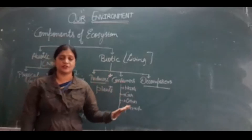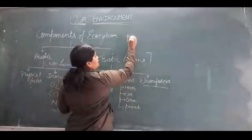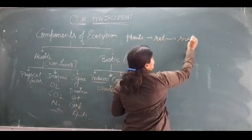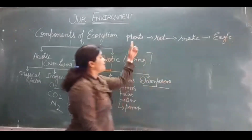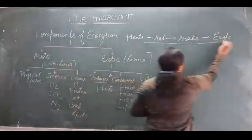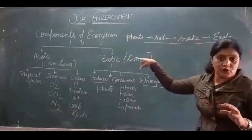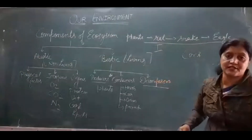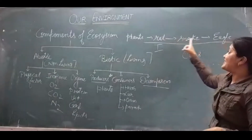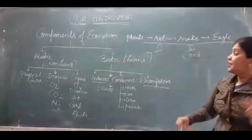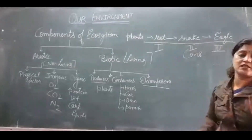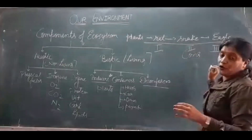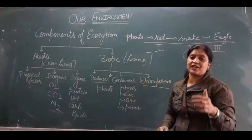Consumers are also categorized as primary, secondary, tertiary, and quaternary consumers. For example: a plant is a producer; a rat eats the plant, so the rat is herbivorous and is the primary consumer; the snake eats the rat, so the snake is the secondary consumer; the eagle eats the snake, so the eagle is the tertiary consumer. All are consumers and all are heterotrophs.